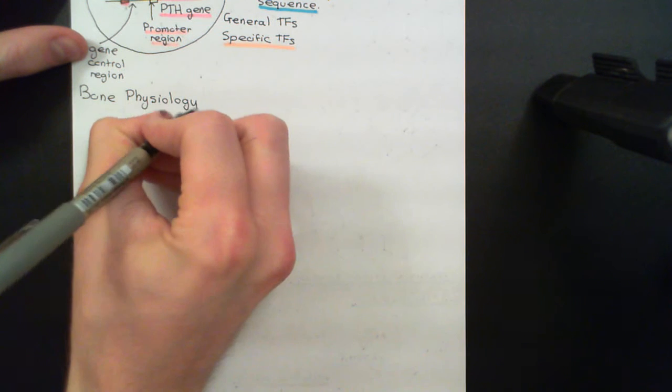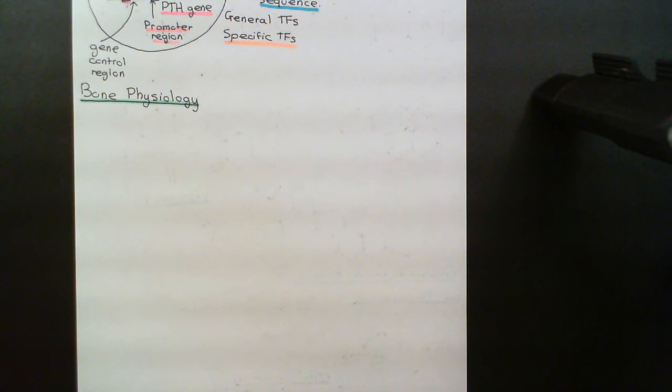The first concept is the difference between cortical or compact bone and medullary, cancellous, spongy, or trabecular bone — there are many different names. To illustrate this, we'll take the distal end of the femur, the knee end, and take a coronal cross-section through it to see what we'd find inside.